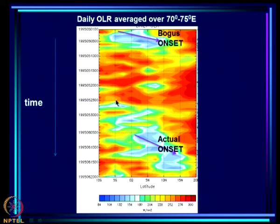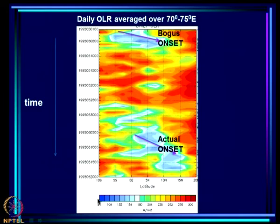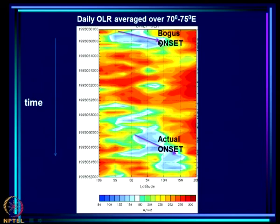Looking at a Hovmöller diagram of daily OLR averaged over 70–75°E (just off the west coast of India, with time going downward): blues indicate very low OLR regions. The low OLR region moved northward from about 5°S to 5°N during the bogus onset — the tip of India is at 8°N — so this represents the bogus onset. But immediately after, there were no deep clouds at all until almost May 25th.